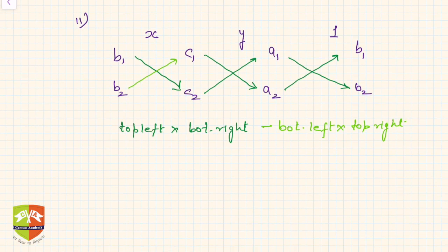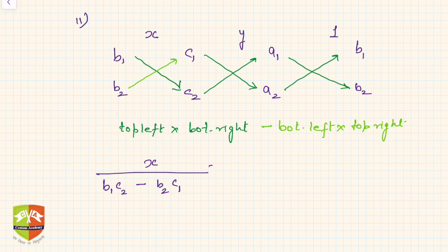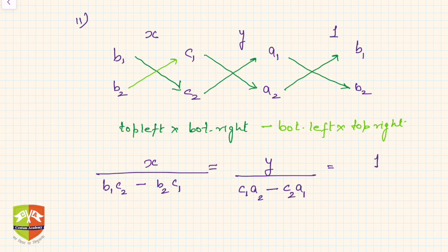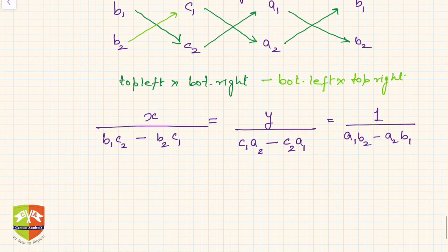So the result is: x divided by (b1·c2 − b2·c1) equals y divided by (c1·a2 − c2·a1) equals 1 divided by (a1·b2 − a2·b1). Notice that underneath x there is no 'a' (coefficient of x), underneath y there is no 'b' (coefficient of y), and underneath 1 there is no 'c' (the constant term).